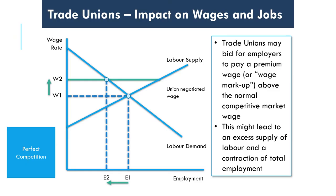Now let's look at the impact of union activity on wages and jobs, starting with a perfectly competitive labour market. We have the demand for labour and the labour supply, and in perfect competition we have a wage rate W1 and a level of employment E1 — the equilibrium wage firms would pay. If trade unions bid up employers to pay a higher wage, saying they won't work for any wage less than W2, this puts the market into disequilibrium.